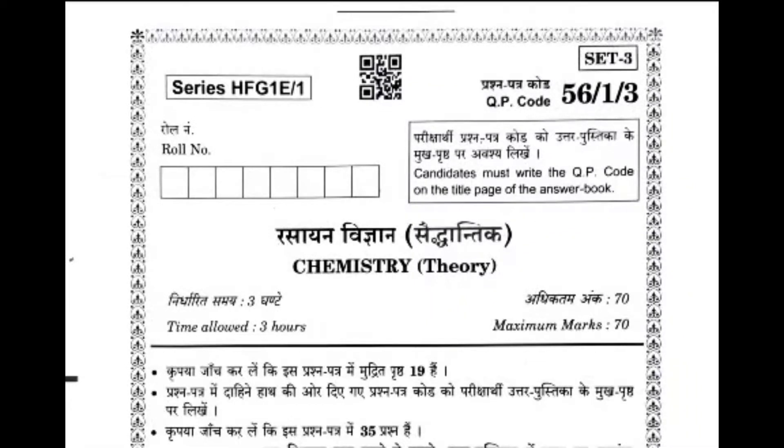Hello students and welcome to the channel of Vidhan Classes. I am Keva sir. Today in this video we have the class 12 chemistry CBSE board paper, set 3. The question paper code is 56/1/3. We are going to see the solution.